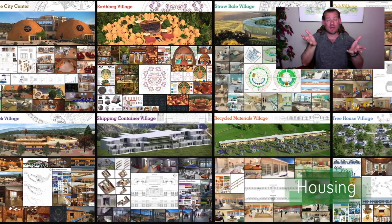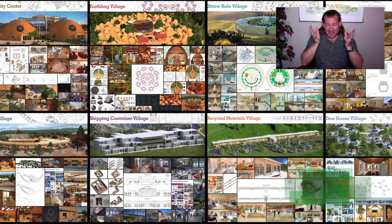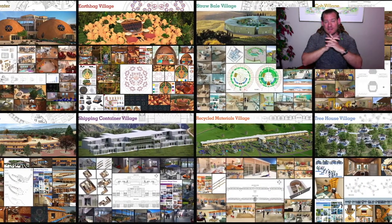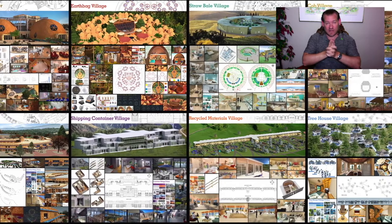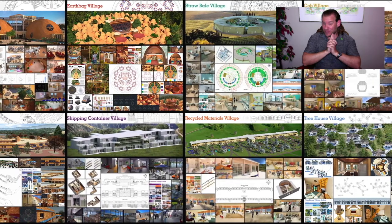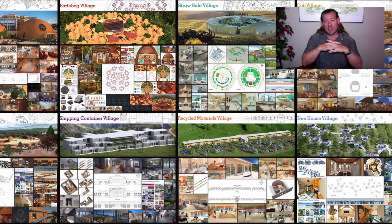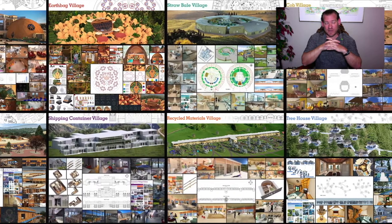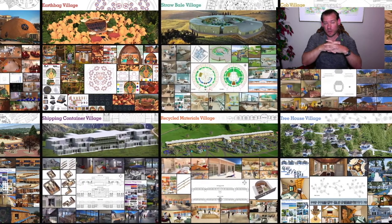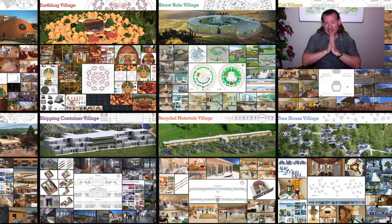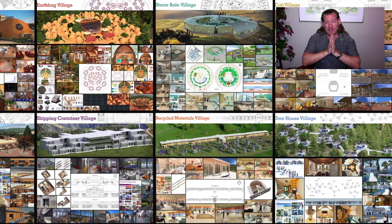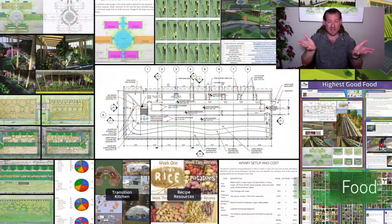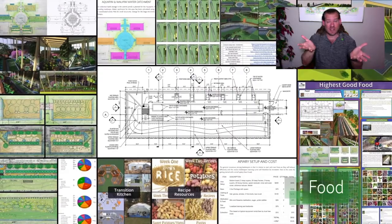One Community is bringing together people with the consciousness and the desire for the highest good of all life on this planet to build sustainable, regenerative, and self-replicating teacher demonstration hubs as a pathway to global sustainability. This is our August 8th, 2021 edition of our Weekly Progress Update and today our topic is designing global cooperatives, because we are doing just that.